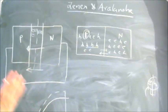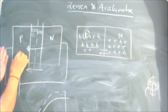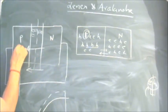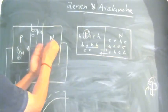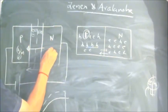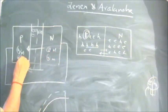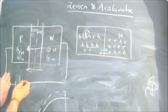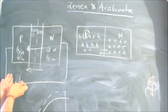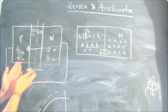The drift current is due to the minority carriers. In the P type, holes are the majority carriers and electrons are the minority carriers. In the N side, electrons are the majority carriers and holes are the minority carriers — I am showing minority by small 'm'.